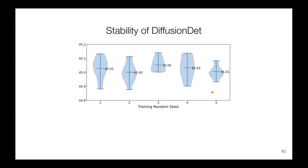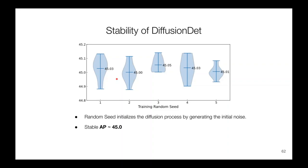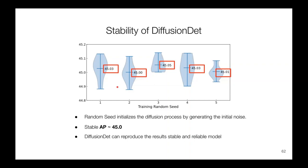For the random seed test: the random seed initializes the diffusion process by generating initial noise, so results can vary. The authors tested five models for ten runs each per seed, and all AP scores were around 45. This means DiffusionDet can reproduce results stably, confirming it is a reliable model. Ethan will now go over our demos and conclusions.